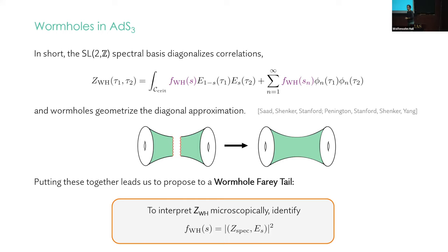This holds together nicely in view of what we learned from JT-RMT. This basis is the one that diagonalizes the correlations, and wormholes geometrize the diagonal approximation. So in view of this, we propose a wormhole fairytale, I'll call it, that is a CFT interpretation of what an amplitude like this is supposed to mean, which is the following. To interpret this amplitude microscopically, we want to identify the overlap that one finds in such an amplitude with the square of the spectral overlap of an underlying microscopic CFT.